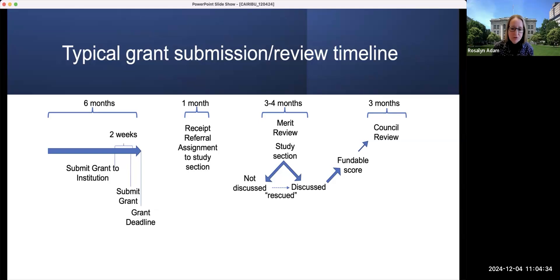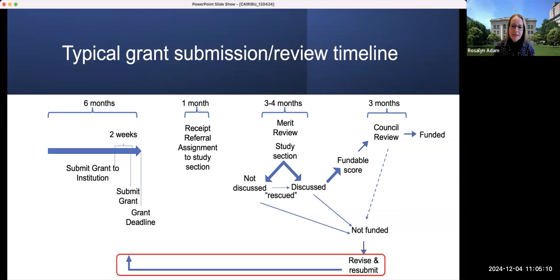There is a mechanism in the study section to rescue a grant that is not discussed, although this is relatively rare. And what you can see here is that there are many paths to being not funded. So if your grant was not discussed, it is not going to be funded. It could be discussed and scored, but not receive a score that is fundable. And then very occasionally at the level of the council review, grants do not move forward to funding. And so what this means is that in many cases you will be faced with the decision to revise and resubmit your grant and you start this process all over again. And so that's really going to be the basis of the presentation.